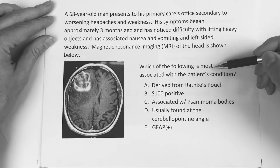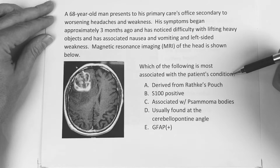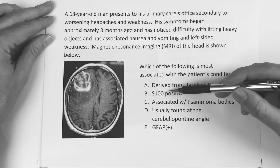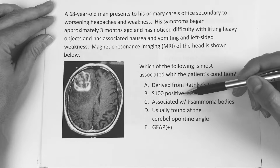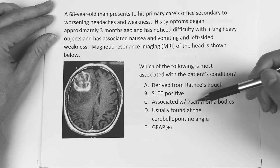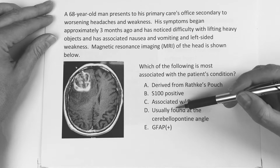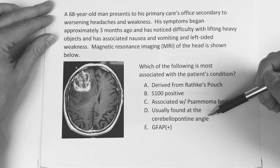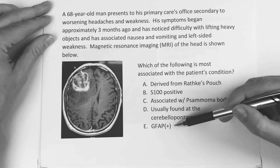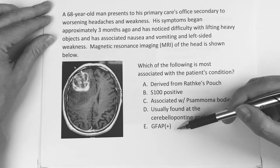Which of the following is the most associated with the patient's condition? Is it A, derived from Rathke's pouch? Is it B, S100 positive? Is it C, associated with psammoma bodies? Is it D, usually found at the cerebellopontine angle? Or is it E, GFAP positive?